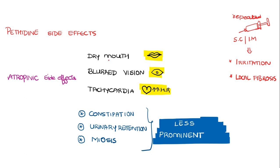The side effects of pethidine include atropinic effects such as dry mouth, blurring of vision, and tachycardia. Side effects like constipation, urinary retention, and miosis are less prominent. However, on repeated subcutaneous or intramuscular injection, it can lead to local site irritation as well as local fibrosis.